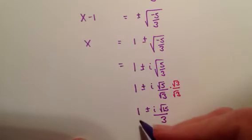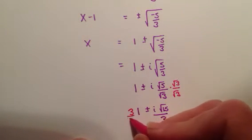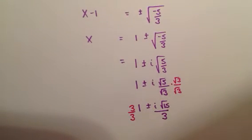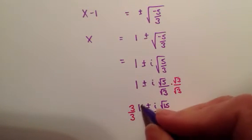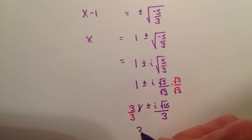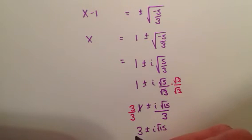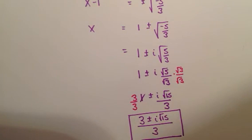You could leave your answer like this, or you could recall that 1 I could really write as 3 over 3, right? Anything over itself is just 1. So I could summarize this numerator by 3 plus or minus i root 15. And since they both have a common denominator of 3, I can just put it all over 3. And that's a nice way to write that answer.